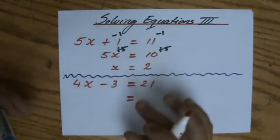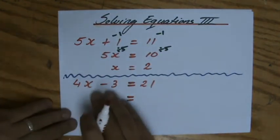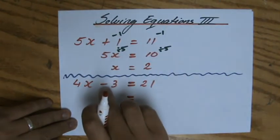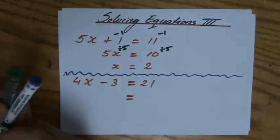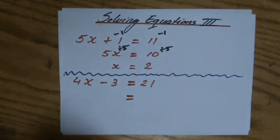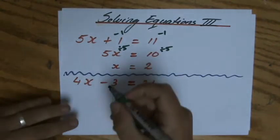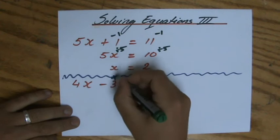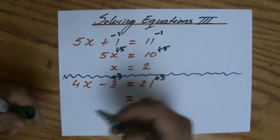All right, 4x minus 3 equals 21. I promise you to do something with a negative number now. So how do I get rid of the minus 3? What is the inverse operation, what is the opposite operation? Plus 3. No need to be worried about that.